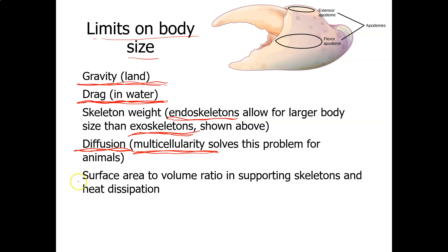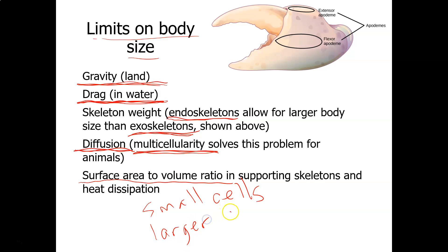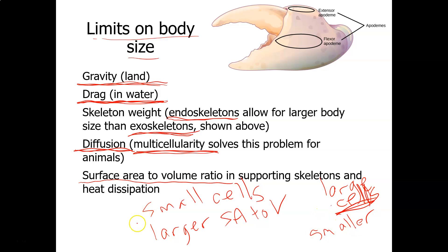Another limit on body size is the surface area to volume ratio, along with supporting skeletons and heat dissipation. Small cells have a larger surface area to volume ratio, while large cells have a smaller one. The same principle applies to animals: the larger the surface area compared to the volume, the faster the animal can release heat from its body so it won't overheat.